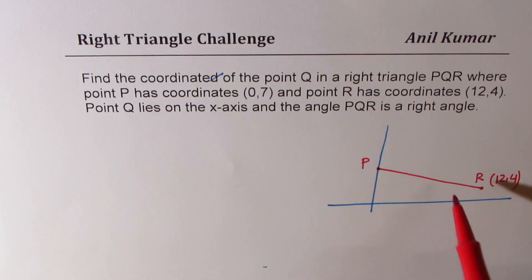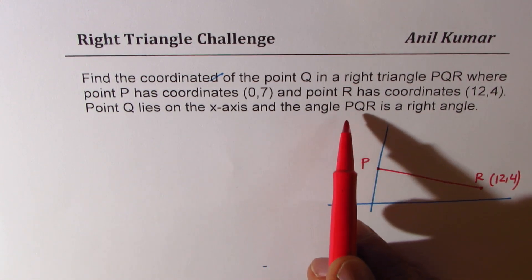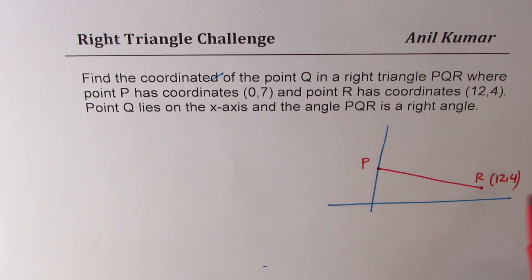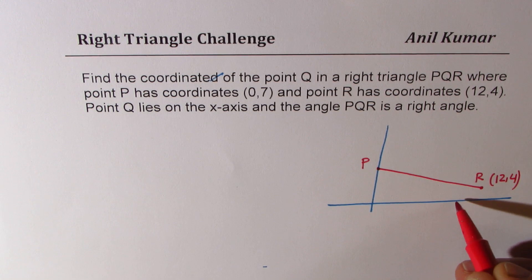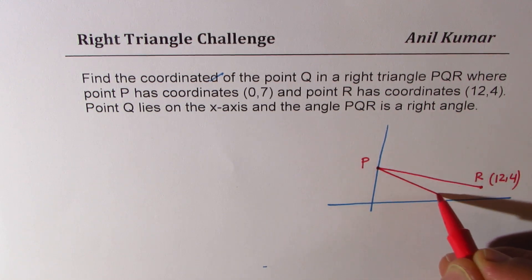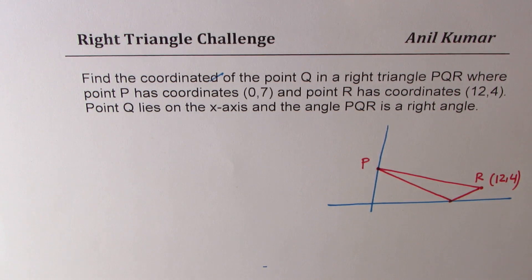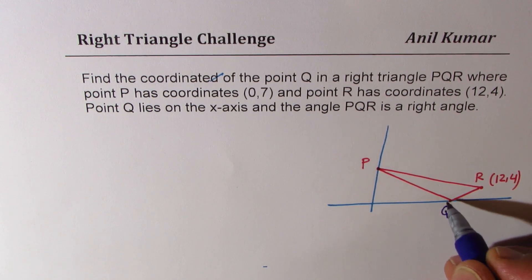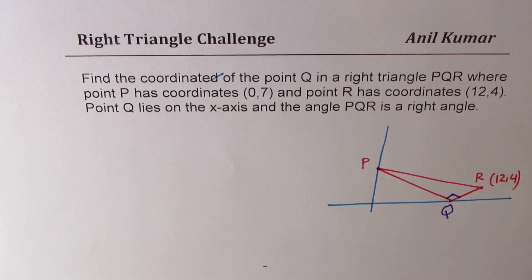Q lies on the x-axis and angle PQR is a right angle. So we're looking for a right angle here. So let me just sketch kind of like this and say that this is the right angle which we are looking for point Q. So this is the right angle. We need to find coordinates of point Q.